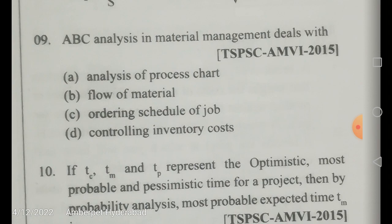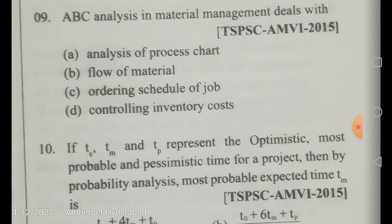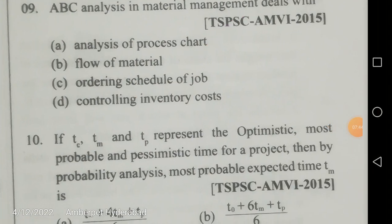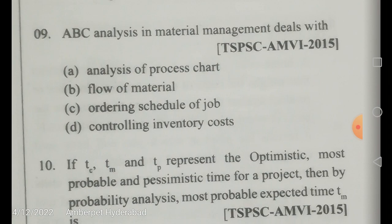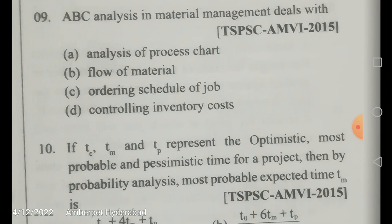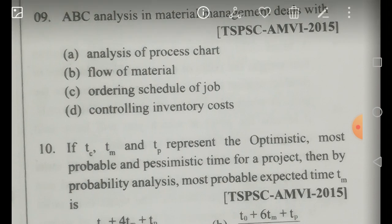ABC analysis is used in material management to control inventory cost. Materials are classified into three categories: A-class items constitute a small percentage but have very high cost; B-class items are medium in both volume and cost; C-class items exist in large volumes but have very low cost.